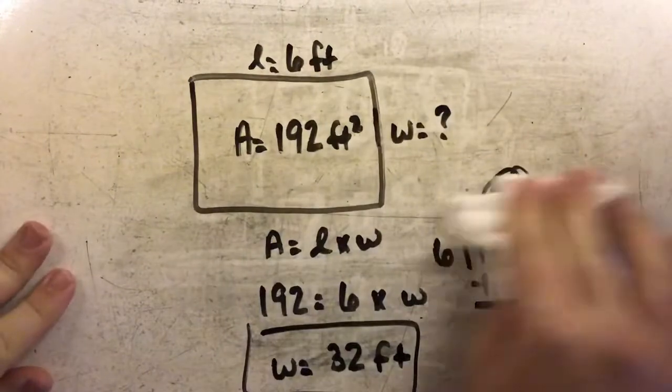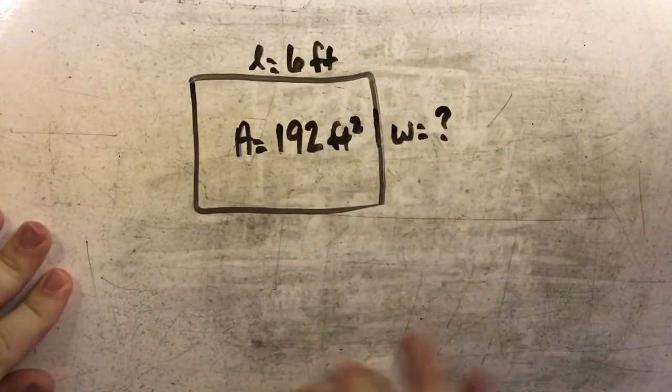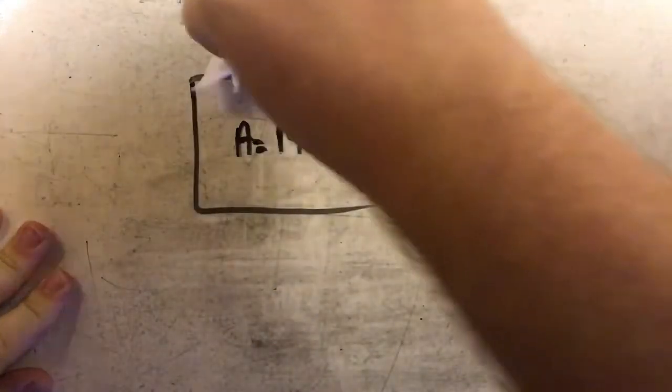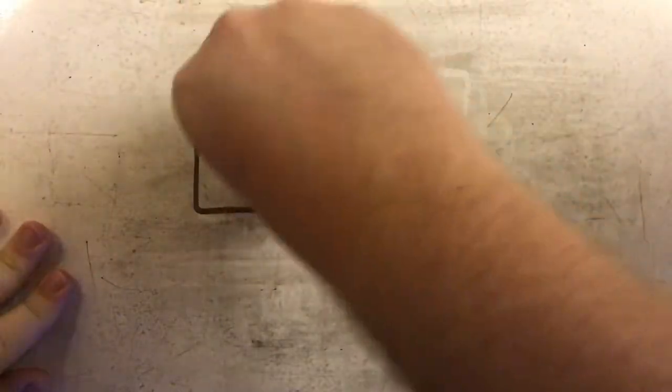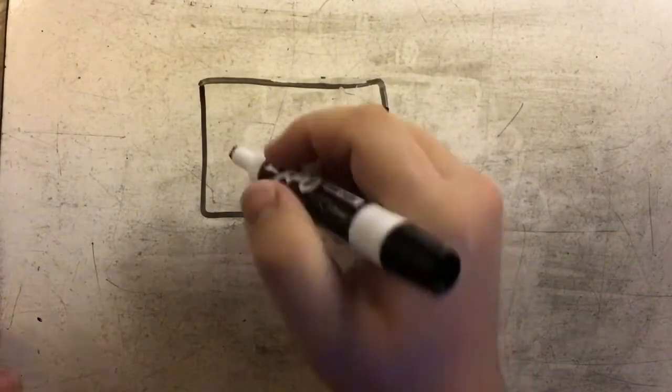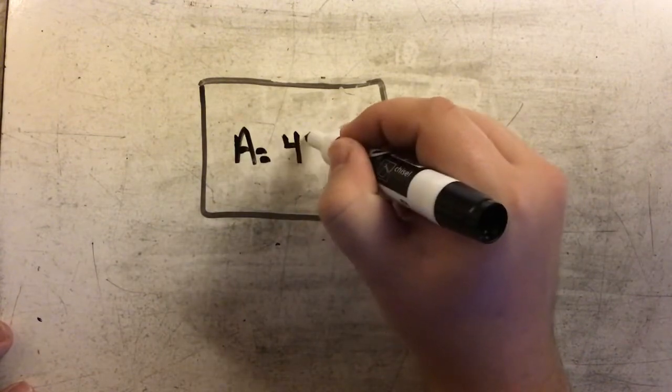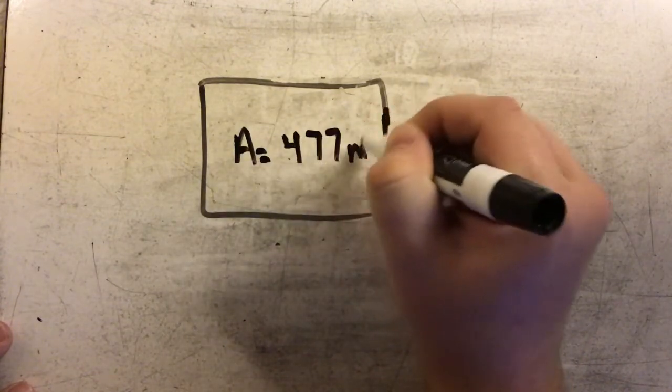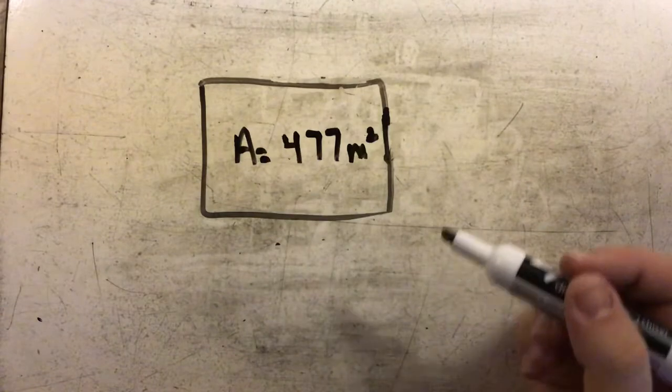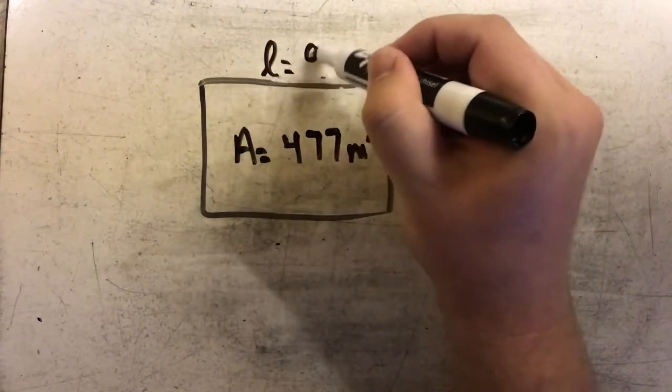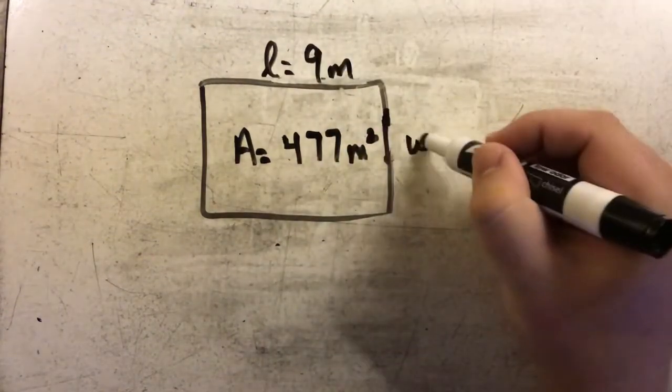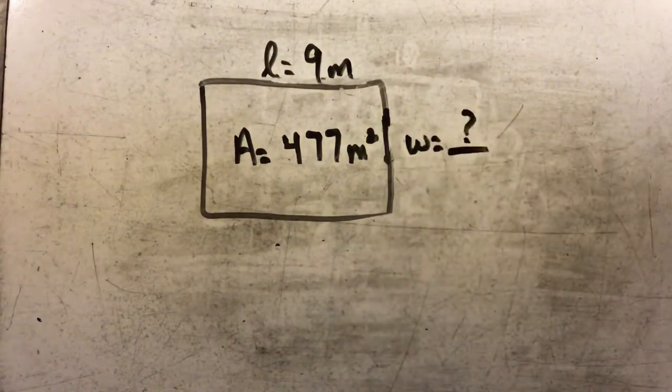Let's do one more example. In this example, the area is 477 square meters, and the length is 9 meters. We want to find the width.